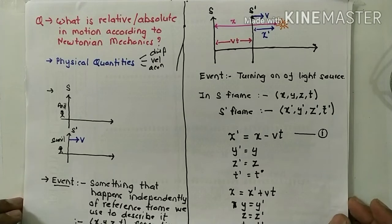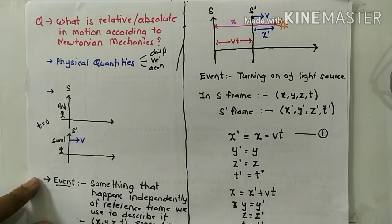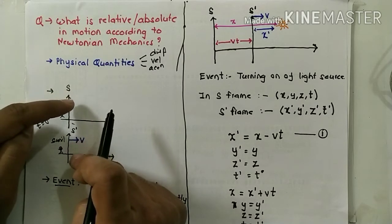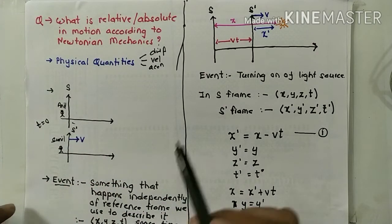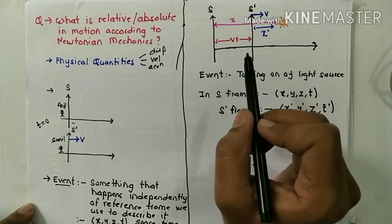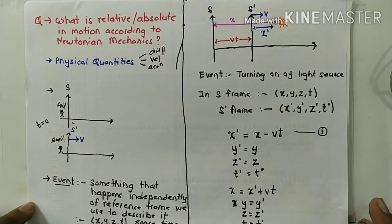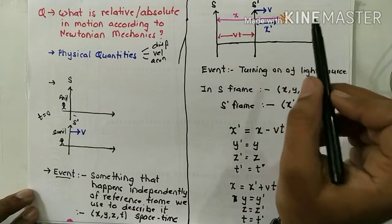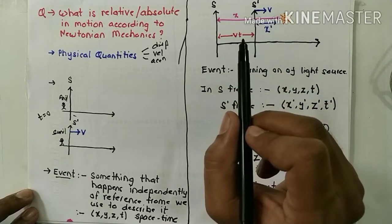Let us take the example of both reference frames. At time t equal to 0, these reference frames coincide — the origins of the reference frames coincide. I have drawn them up and down but actually they are coinciding. After some time interval t, when the S-dash reference frame has moved a little bit forward, let us say an event happens — like the switching on of a bulb. When this bulb switches on, what is the x, y, z, and t of this event with respect to S and with respect to S-dash?